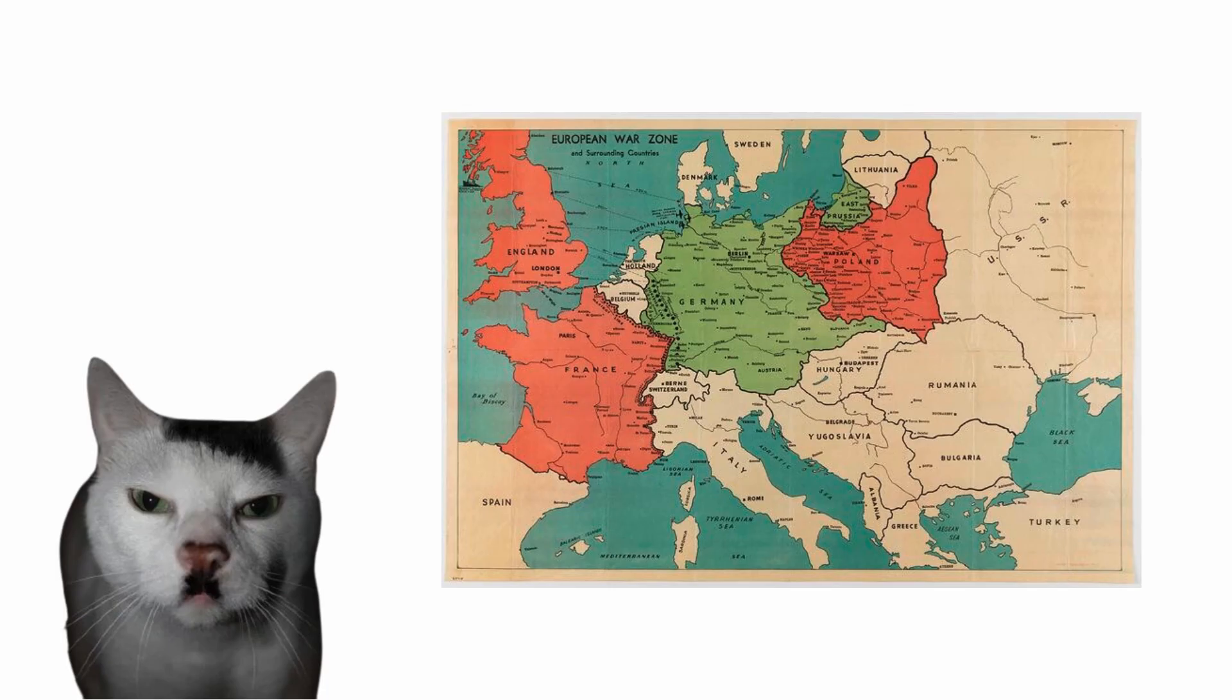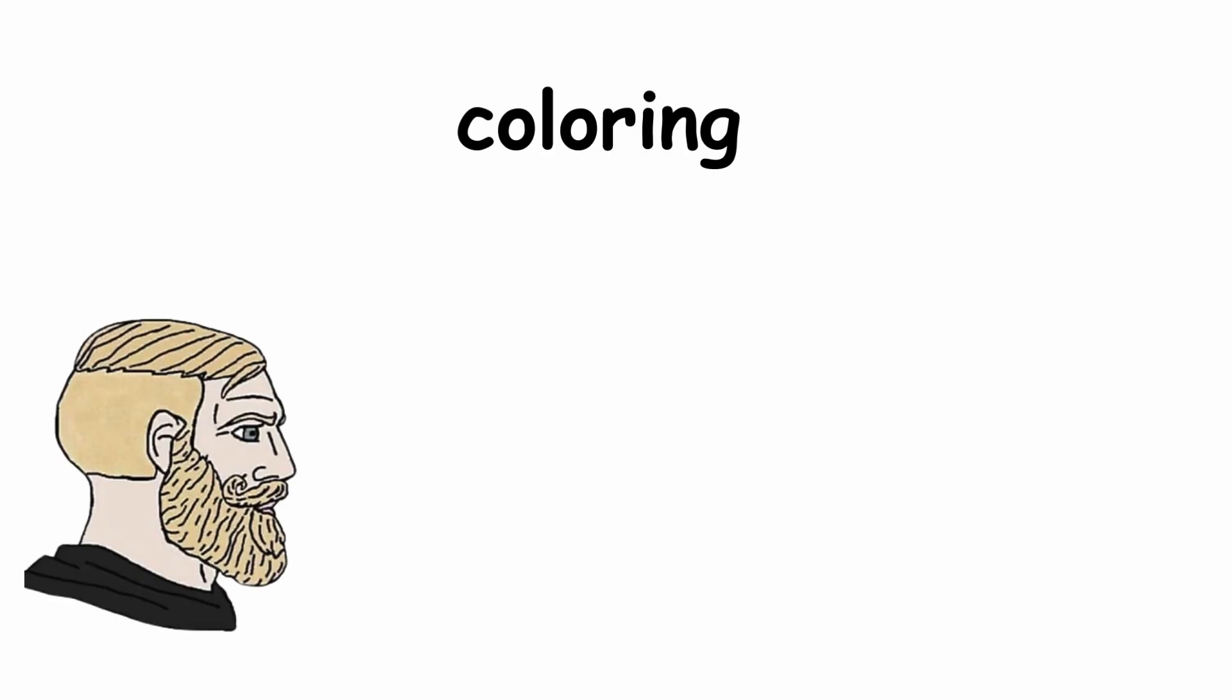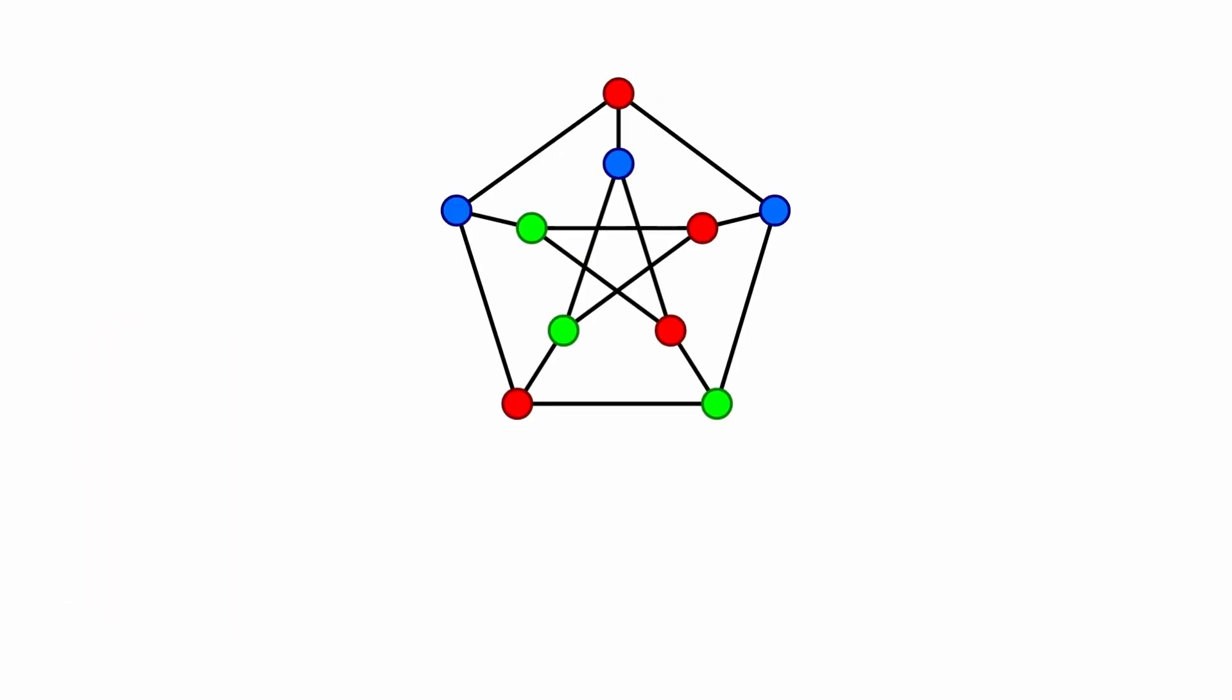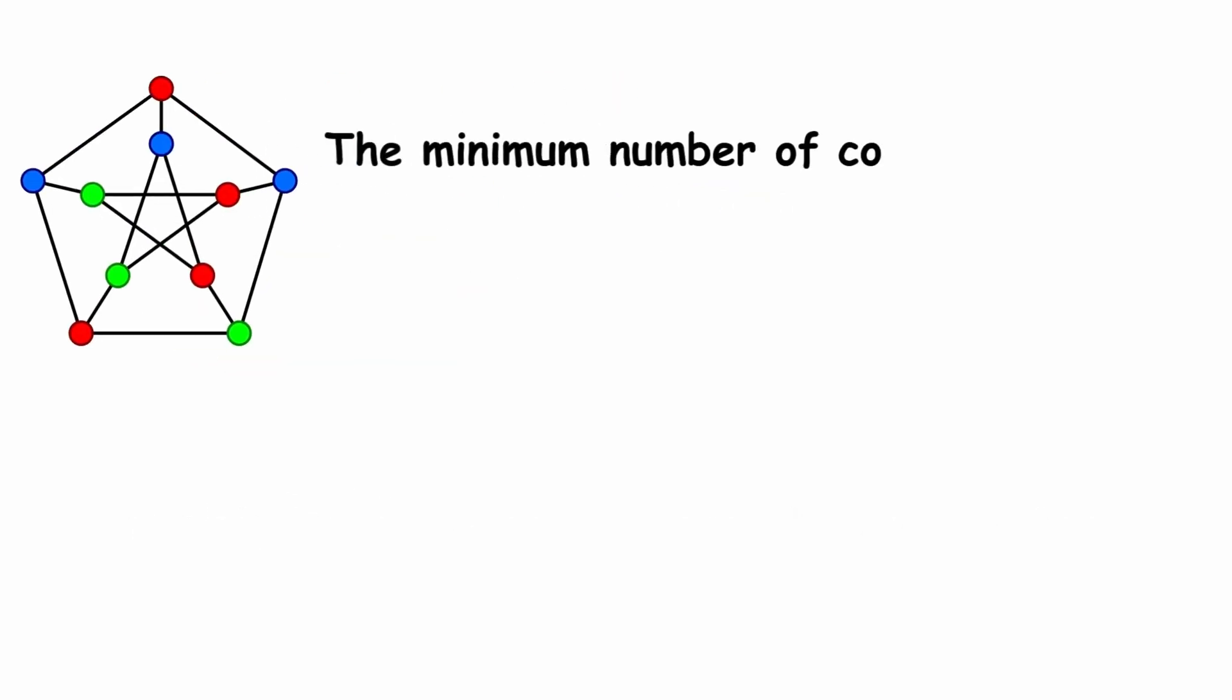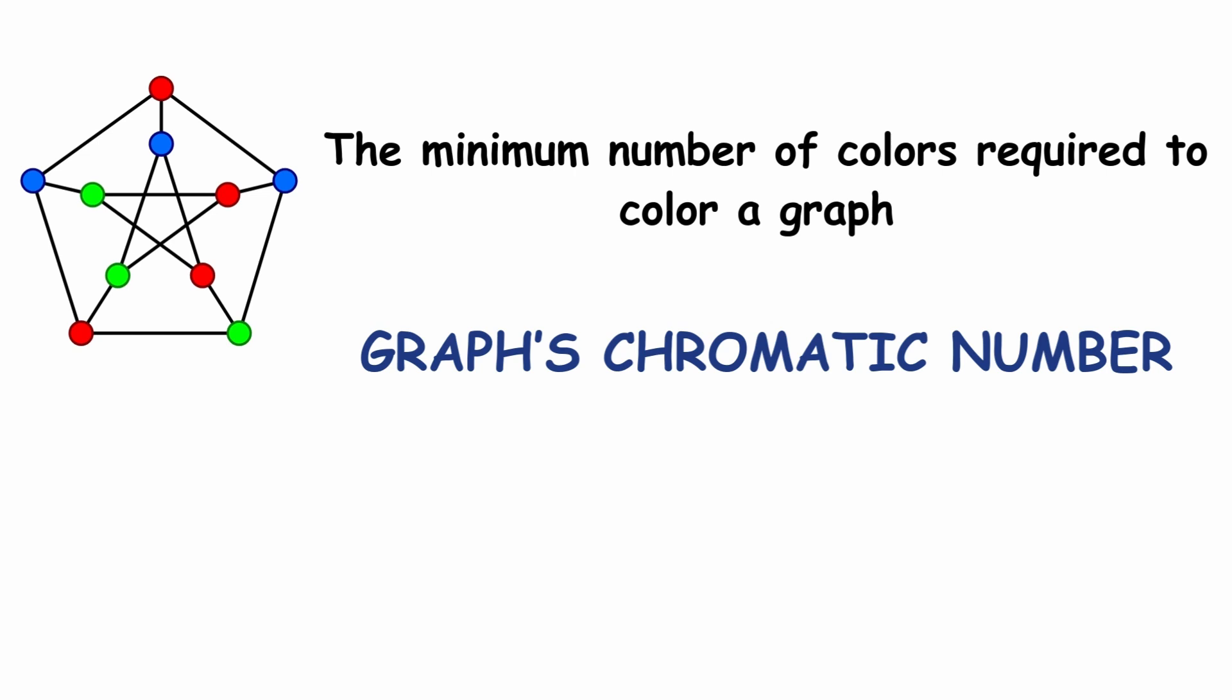In map coloring, we like to ensure that no neighboring regions have the same color. Similarly, a proper vertex coloring of a graph, or just coloring for short, assigns each vertex a color so no neighboring vertices are the same color. The minimum number of colors required to color a graph is called the graph's chromatic number.